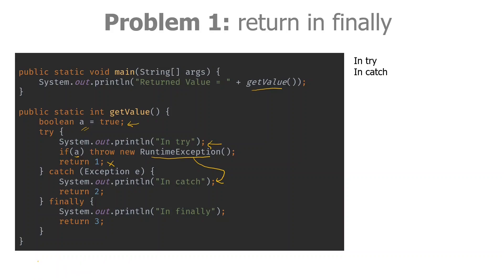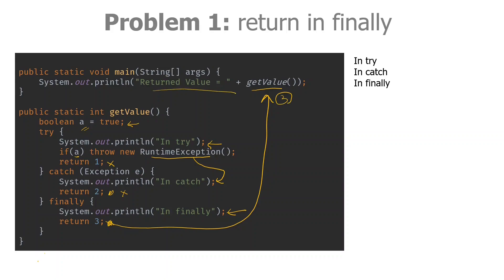Now what will happen at this point — whether the return 2 will get executed or not. In a typical program we would expect that control should return from here because there is a return statement, but not in this case. Because a finally block is always executed, instead of returning from catch, control will come to the finally block. It will print 'in finally', and then since there is another return statement, that will get executed and return control with a value of 3. So on the console we should see returned value equal to 3.